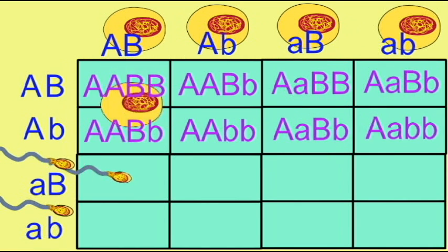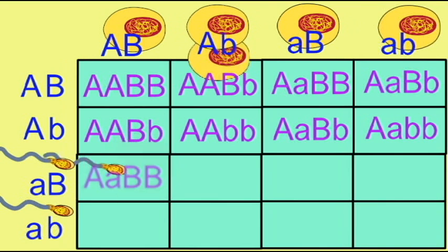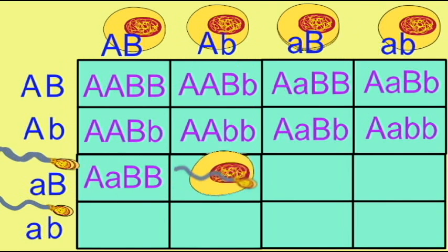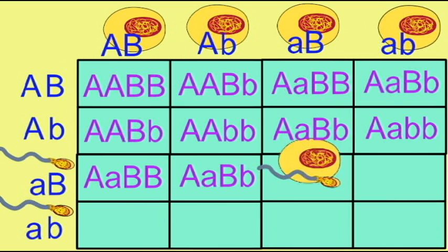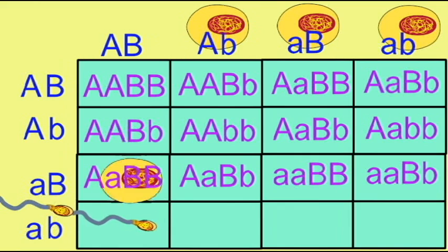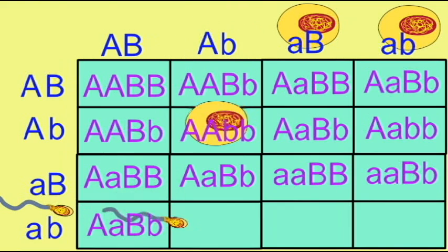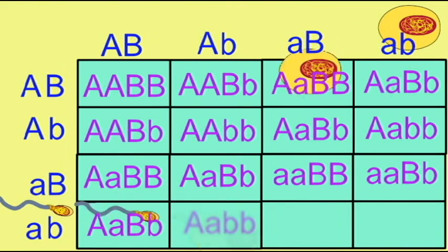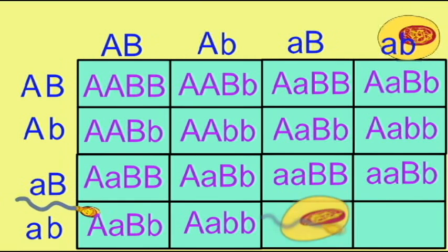When you are filling in the Punnett square, one simply combines the alleles from each of the two parents. And in this scenario, since there are four possible combinations from each of the two parents, then there are 16 possible genotype combinations.